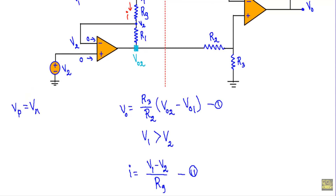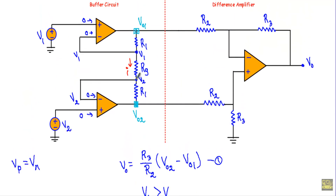When this current I enters at this point, it will divide into two parts. But since the op-amp is in negative feedback, the current through the inverting terminal will be zero — that means the same current I will flow through resistor R1. Similarly, since the current through the other inverting terminal path is also zero, the same current I must come from the other direction and flow through the other resistor R1 as well.